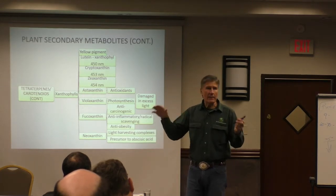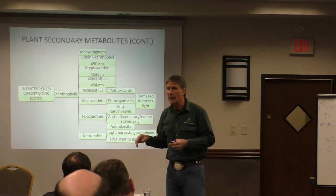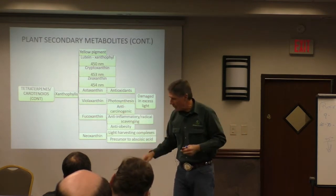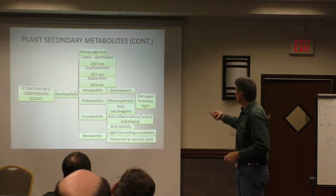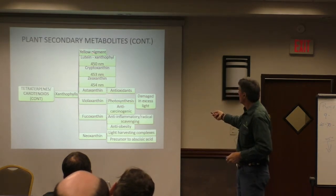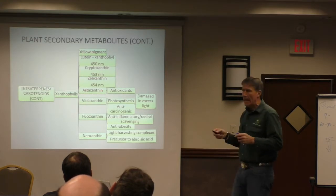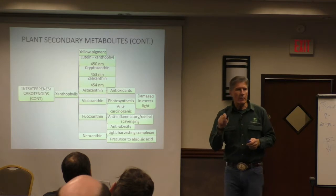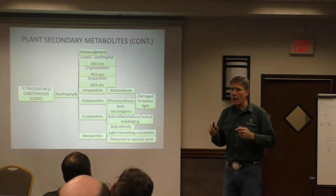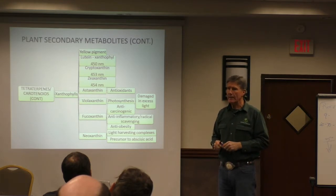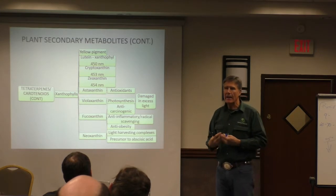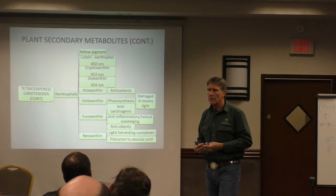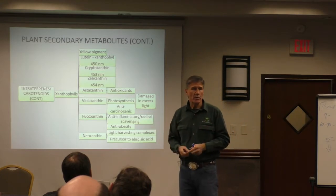This stuff gets really complicated pretty quick, but it's all there if we have time to go look at it. Now the cool thing is when we start looking at this - these are our yellow pigments. Astaxanthin - that is the most powerful antioxidant that we have on the planet. It will detox better than any other antioxidant, and a lot of it's produced from algae.